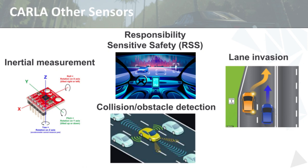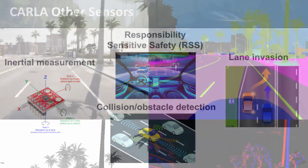CARLA also provides information on collision and obstacles, so you can understand if your virtual vehicle has collided with another vehicle or obstacle within the simulation. There's also an implementation of the Responsibility Sensitive Safety standard and information on lane invasion. In today's tutorial we're going to cover a number of these different sensor types and show you how to use them through the Python API.